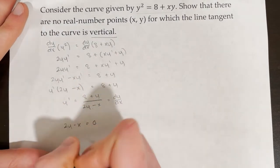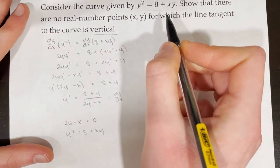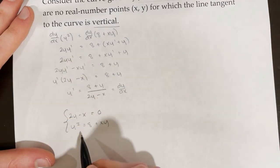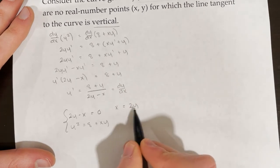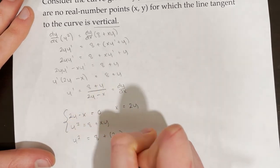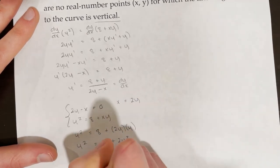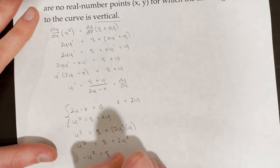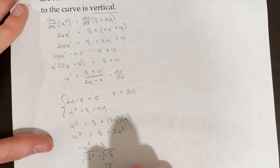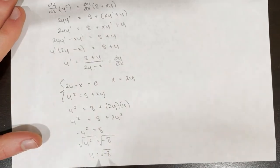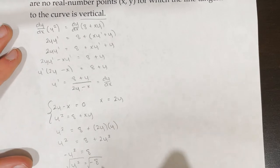So my system is: 2y - x = 0 and y² = 8 + xy. Using substitution, x = 2y, so plugging in: y² = 8 + 2y². This gives negative y² = 8, or y² = -8. Taking the square root leads to y = √(-8), which is not a real number.